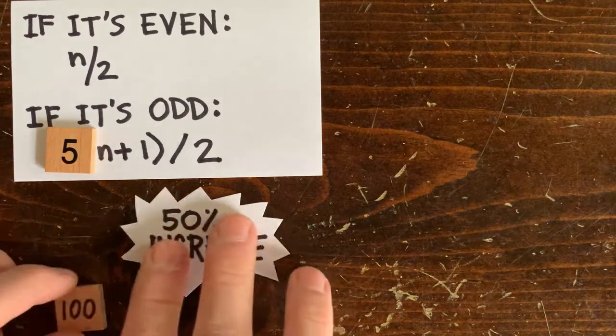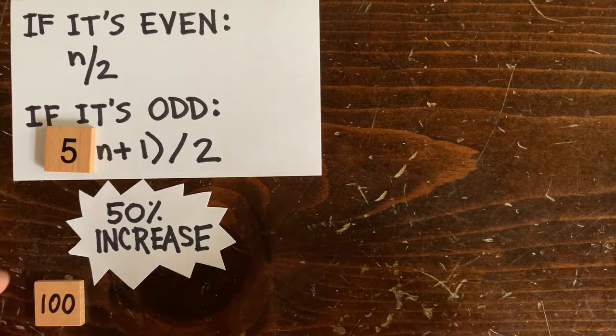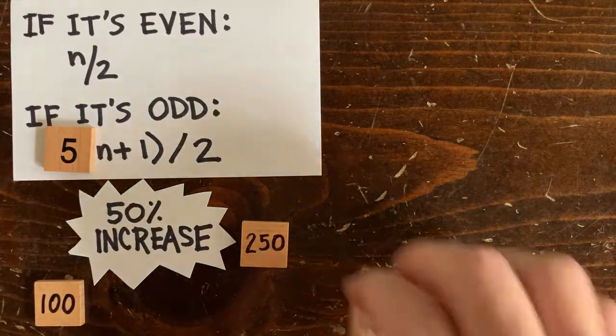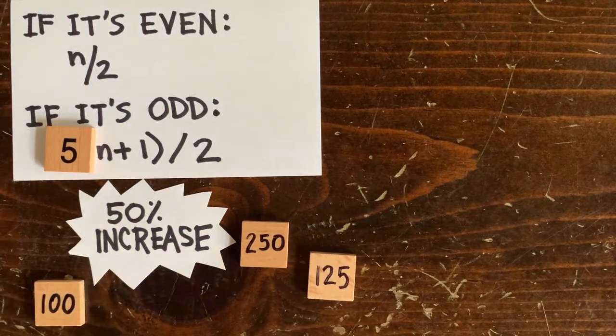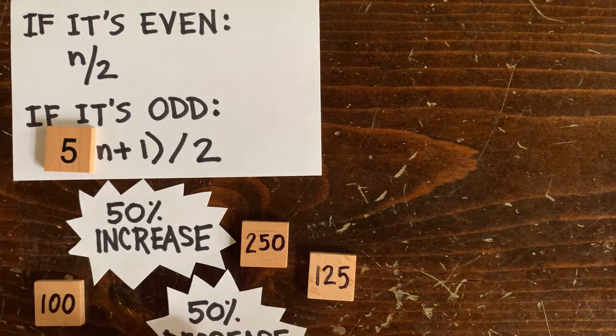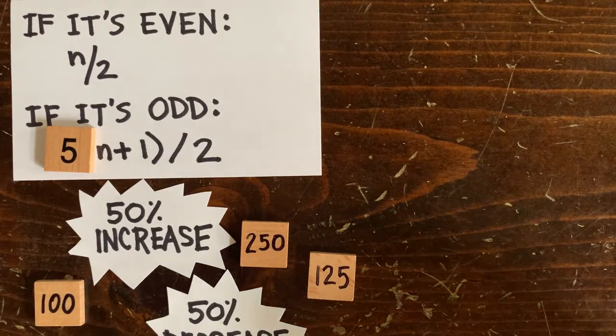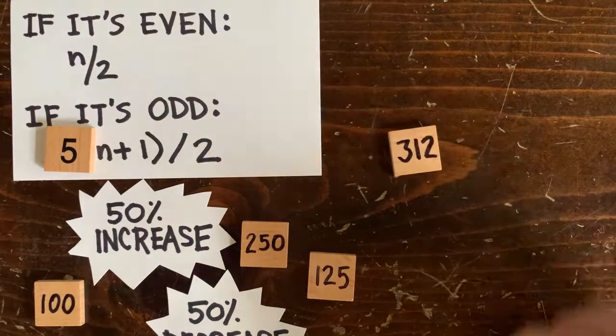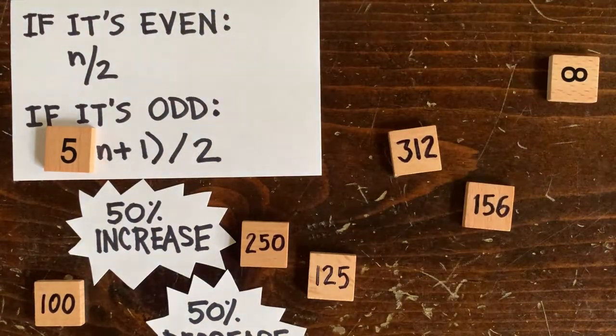If a plane ticket costs $100, then after an increase and a decrease it will cost about $125, and so on up. Unlike 3n plus 1 sequences, 5n plus 1 sequences mostly seem to march off to infinity, though no mathematician can prove that any of them actually do.